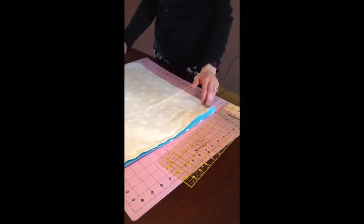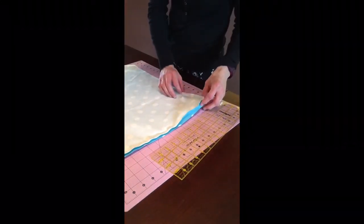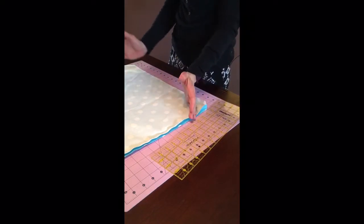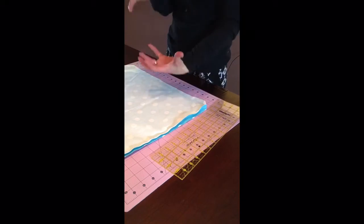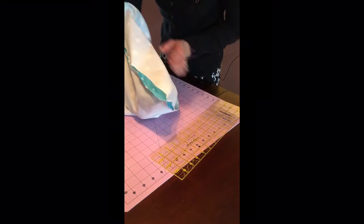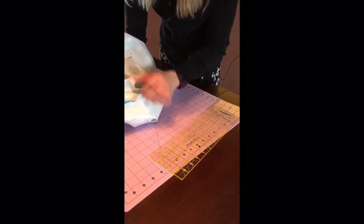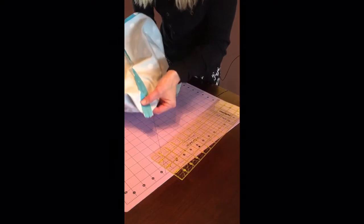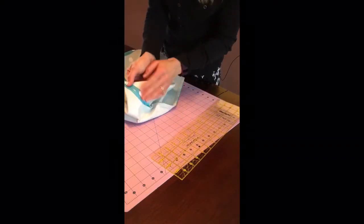So we have the edges of the bag sewn. And now we're going to do the boxed corners. As I mentioned in the beginning of the video, the boxed corners is going to be a really simple step. We're just going to add two more seams here and here. And it's going to give the bag depth. Instead of it just being like this kind of flat tote thing.